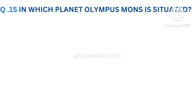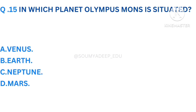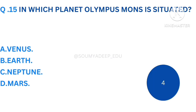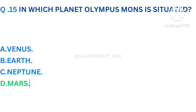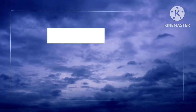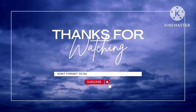In which planet is Olympus Mons situated? The options are Venus, Earth, Neptune, Mars. Your time starts now. The answer is Mars. Thanks for watching. Don't forget to subscribe.